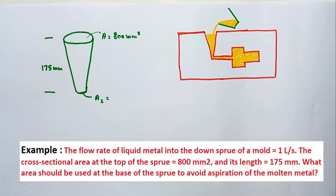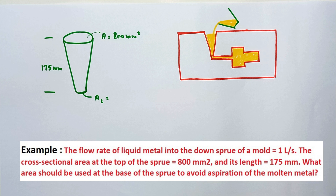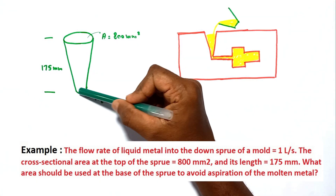In this problem, the flow rate of the liquid metal into the downsprue of a mold is equal to 1 litre per second. The cross-sectional area at the top of the sprue is 800 square millimeters, and the height of the sprue is 175 millimeters. We need to find what area should be used at the base of the sprue to avoid aspiration of the molten metal.